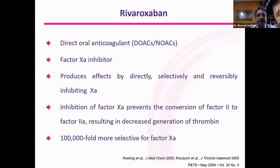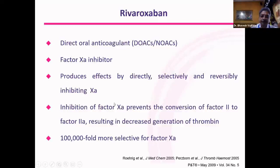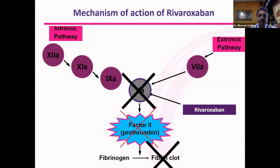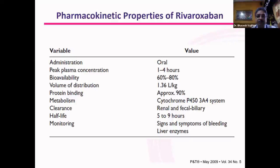Rivaroxaban blocks factor Xa at the common pathway, preventing clot formation. It acts very quickly — peak plasma concentration can come as early as one hour to a maximum of four hours. The half-life is only five to nine hours. Its metabolism is both from the kidneys and from the liver. So if a patient has significant renal disease, you could still give it because it can be excreted by the liver through the fecal-biliary route.